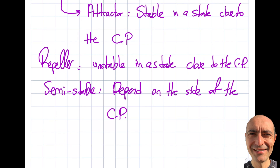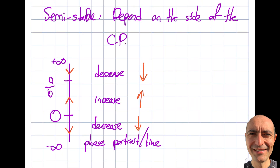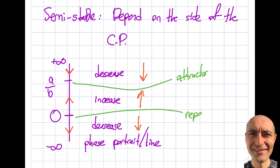Looking at the previous logistic equation example: the critical point at a/b has solutions approaching it from both above and below — that is an attractor, or asymptotically stable. The critical point at 0 pushes solutions away from both sides — that is a repeller, unstable. In the next segment, I'll solve a more comprehensive question to illustrate these principles one more time. I'll catch up with you soon, take care.